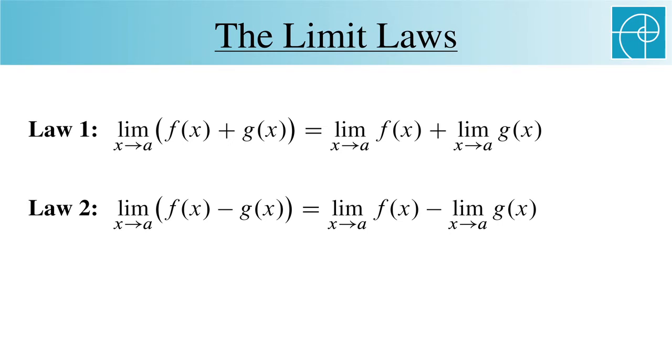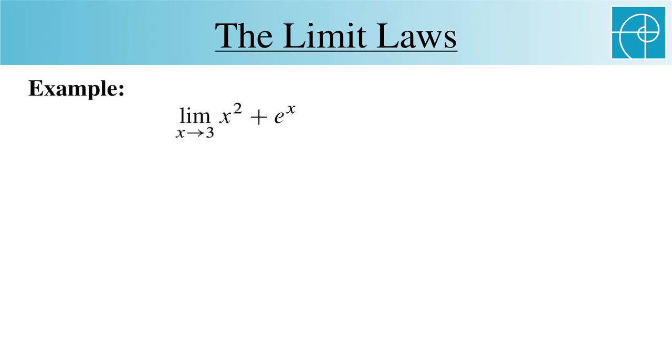Let's take a look at an example. If we want to find the limit of x squared plus e to the x as x approaches three, then we can look at the limit of each part separately. This becomes 9 plus e cubed. The 9 is the limit of x squared and the e cubed is the limit of e to the x.